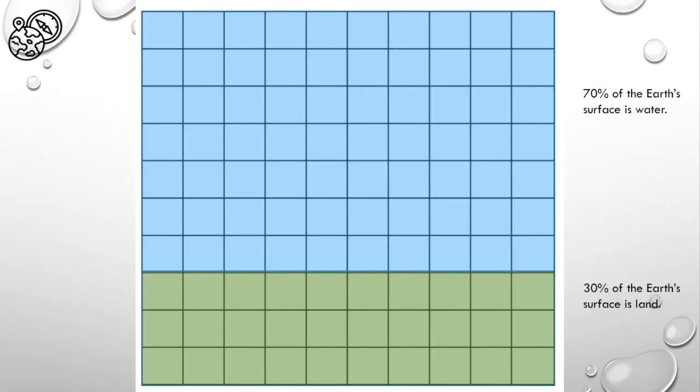Well, it turns out 70% of the Earth's surface is water. This is the same, by the way, as your human body. 70% of your body is made up of water. That means only 30% of the Earth's surface is land.